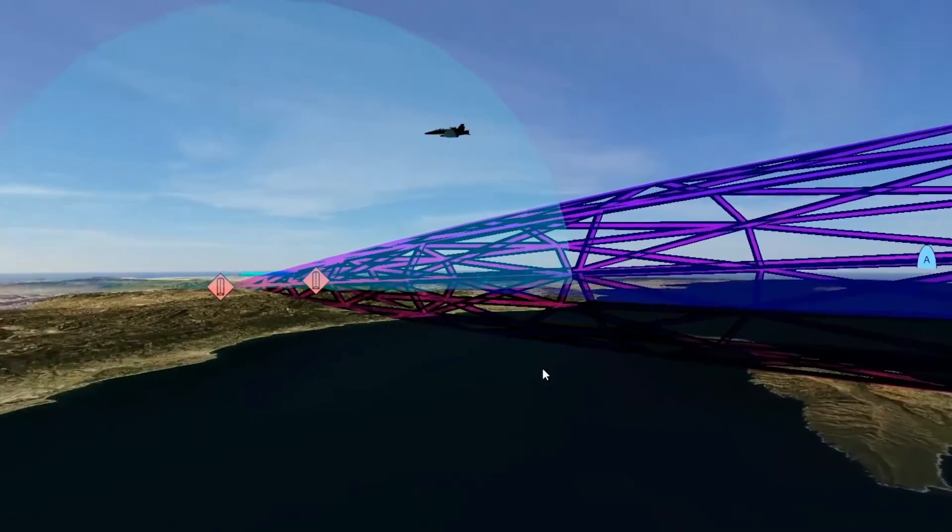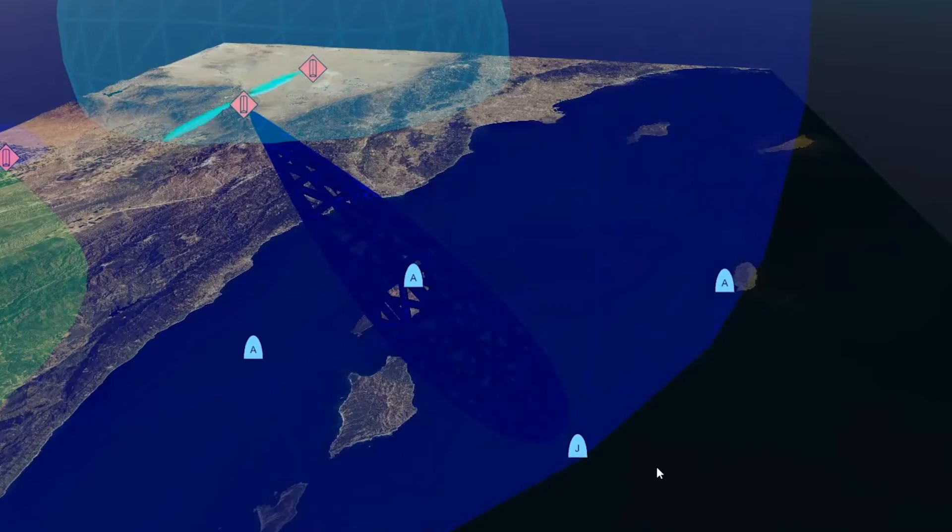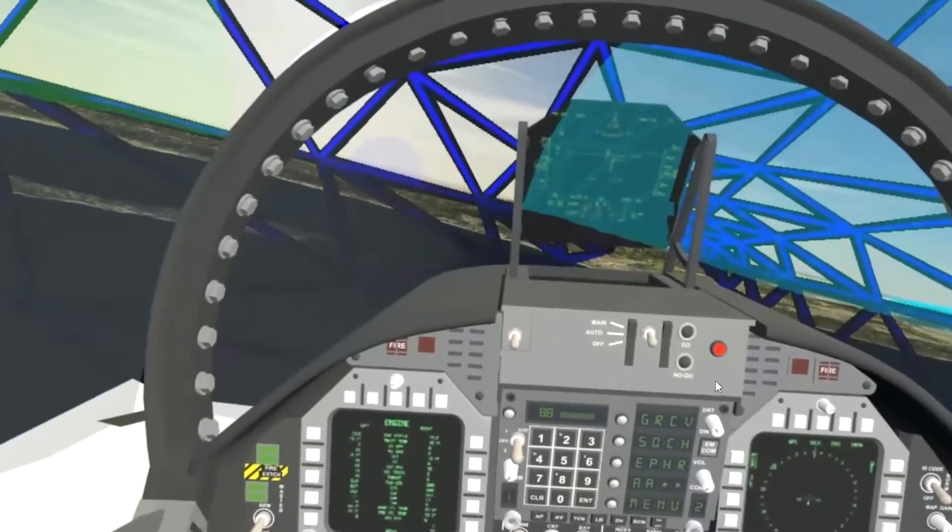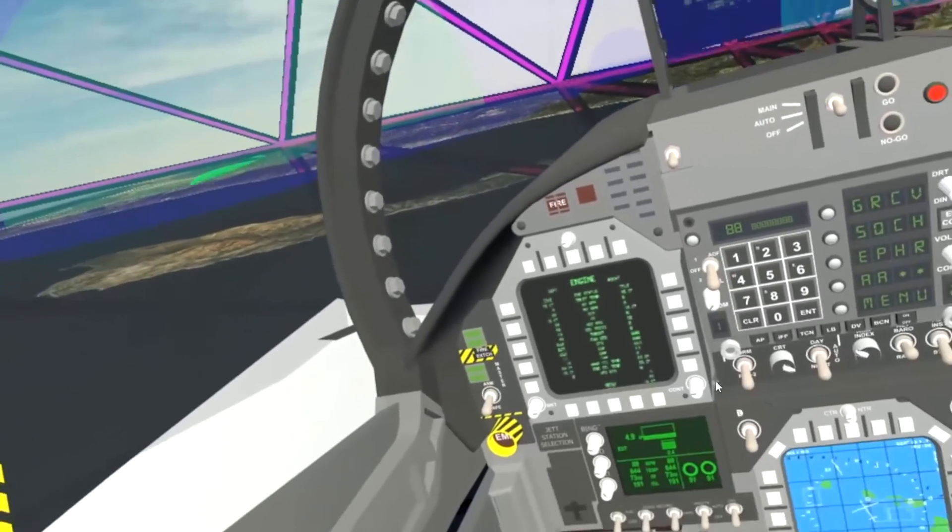The two basic components of our system right now is a mission conductor view for the individual who is overseeing the scenario. And then the pilot view which would be the view that a front or back seat pilot or NFO would actually be seeing.